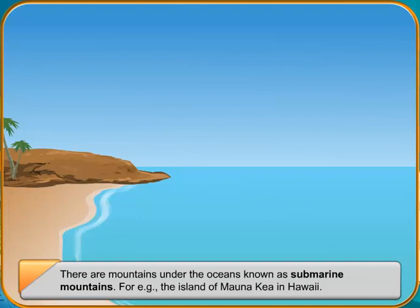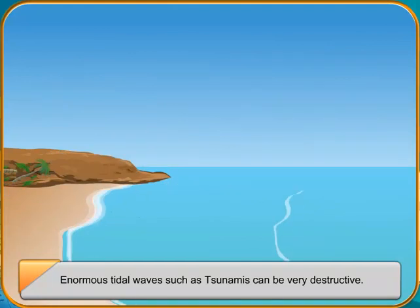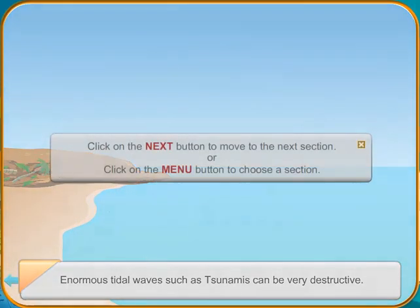Tides. The sea level rises and falls throughout the day and night due to the strong gravitational pull exerted on the earth by the sun and the moon. These periodic changes in the water level are called tides.